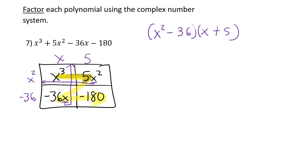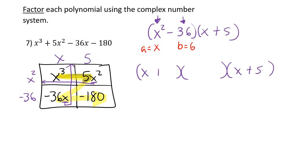I notice one factor is x-squared minus 36, which could be a difference of squares. Is x-squared a perfect square? Yes. Is 36 a perfect square? Yes — 6 times 6. So a equals x and b equals 6. Since it's a difference of squares, I write two parentheses: x plus 6 and x minus 6. The full factored answer includes x minus 9, x plus 6, x minus 6, and x plus 5.